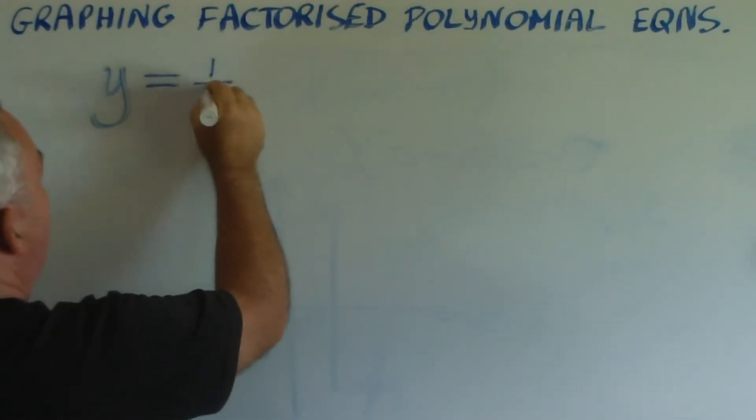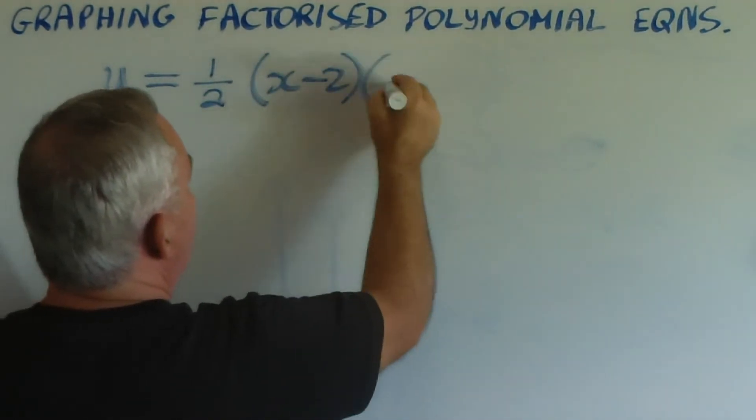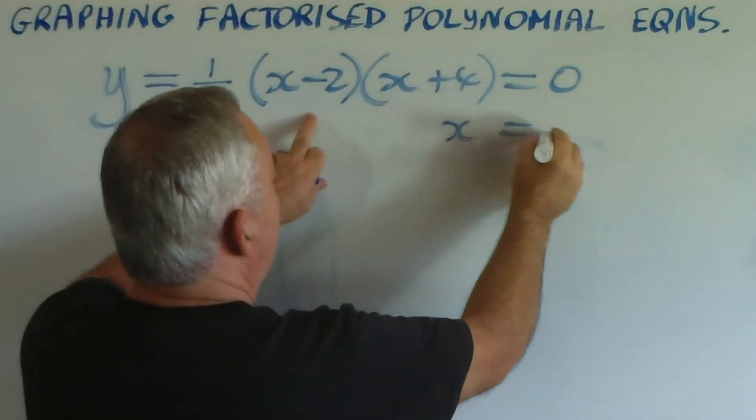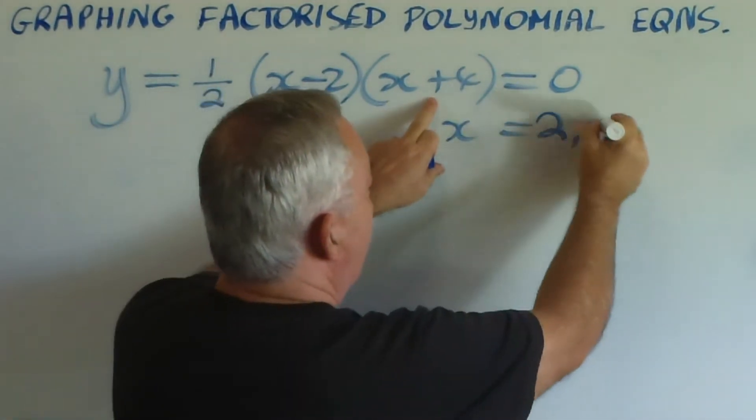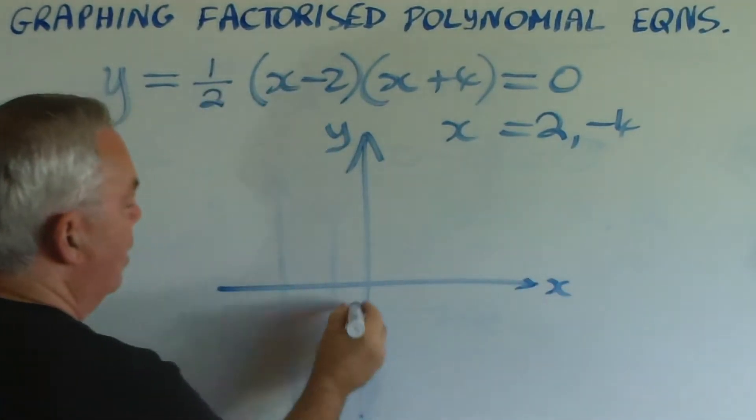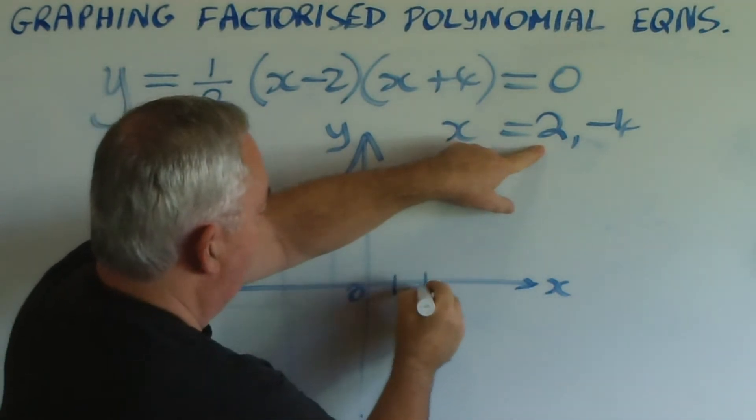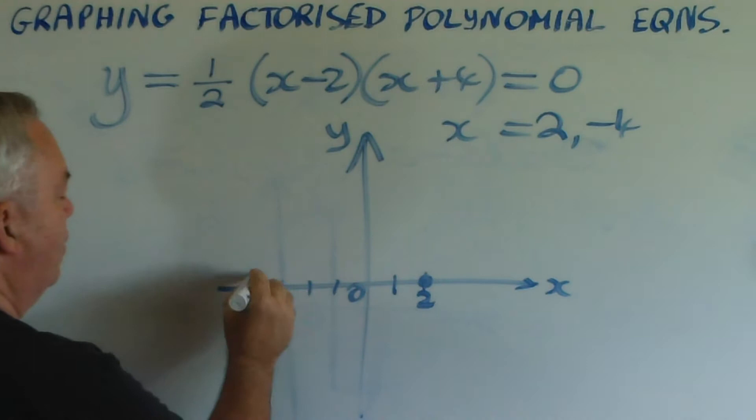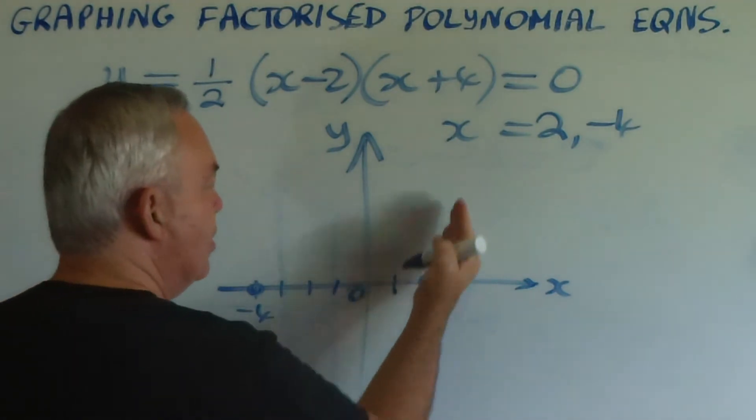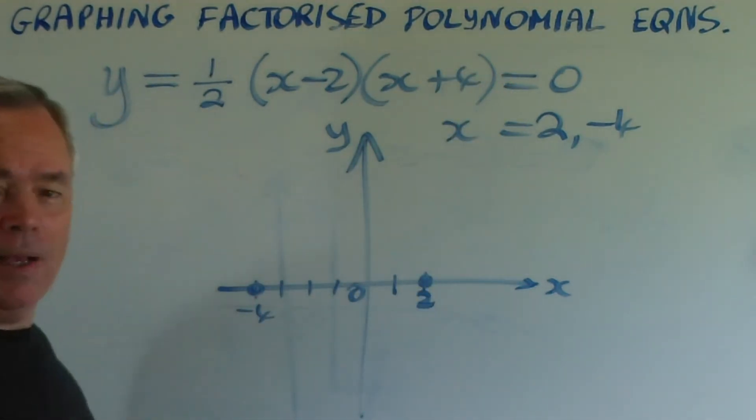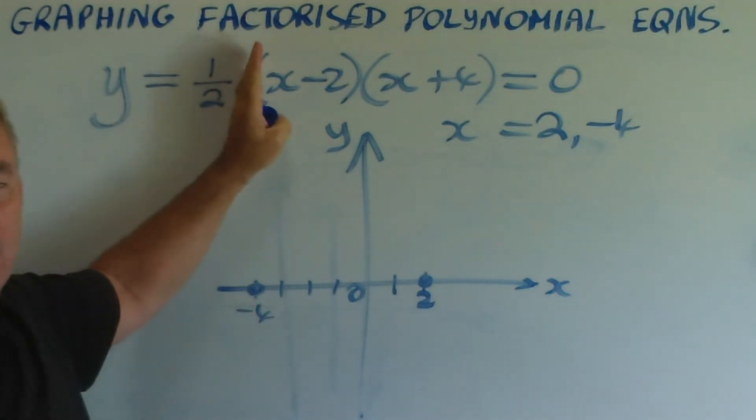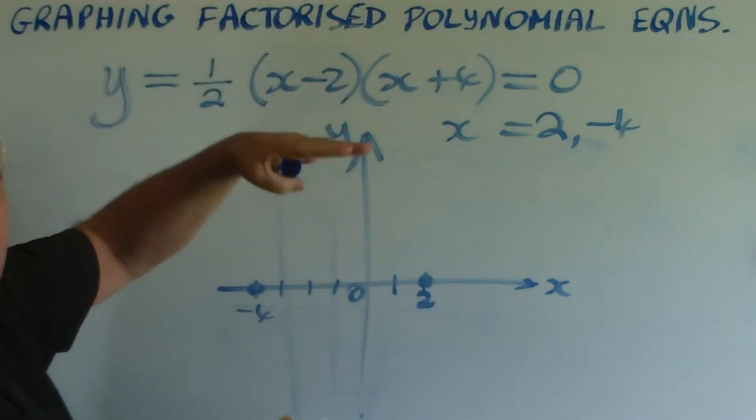What if we had something like one-half times (x - 2)(x + 4)? Again, finding the roots, there'll be a root at x equals 2 and a root at negative 4. Let's plot the roots to negative 4. It's a positive value, so we know the graph is rising as x increases. But it's only a half. It means that whatever value this expression takes on, we halve it before we find the y value.